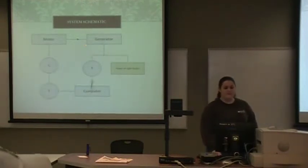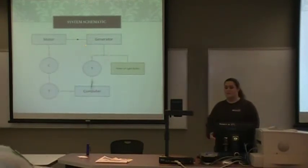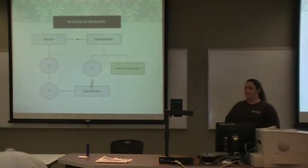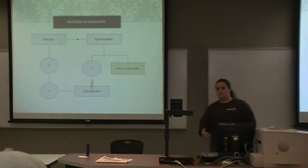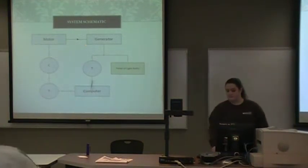This is a schematic for our system. It has a motor, a generator, a transmitter, and a computer. You tell the computer what you want the power input to be, and it transmits that to the motor-generator, and then it shows it to the light bulbs.